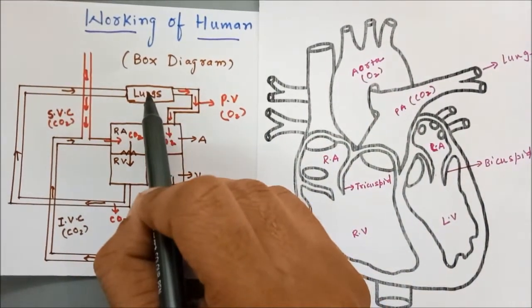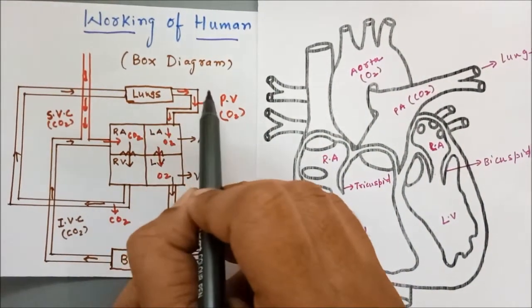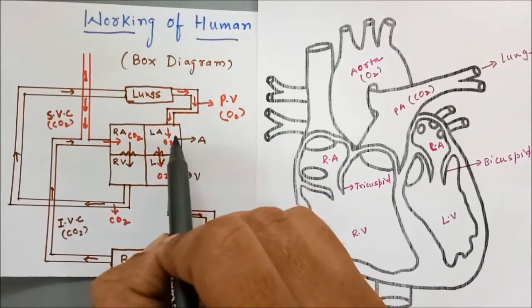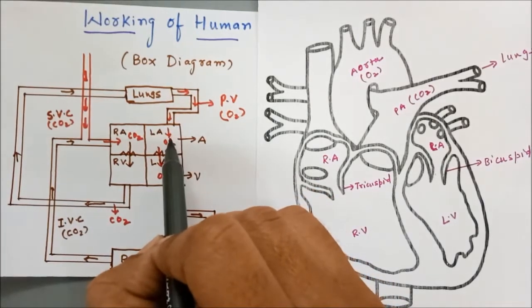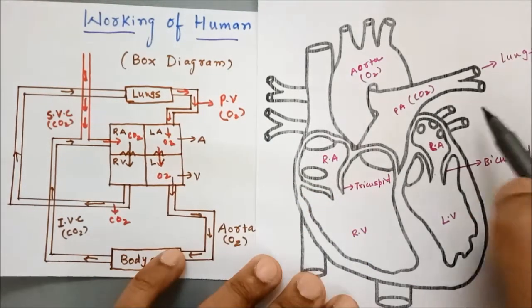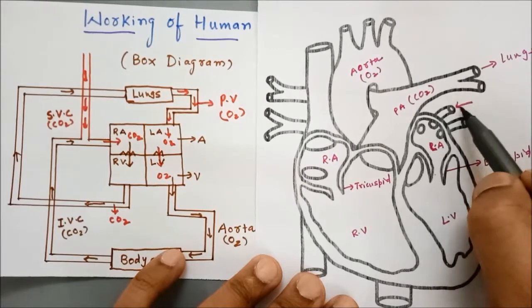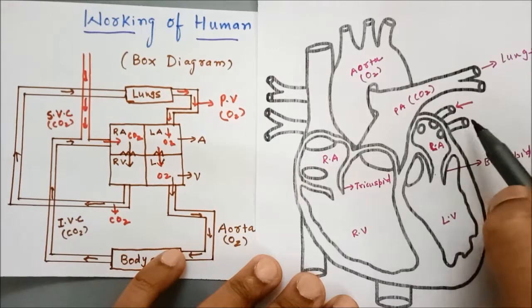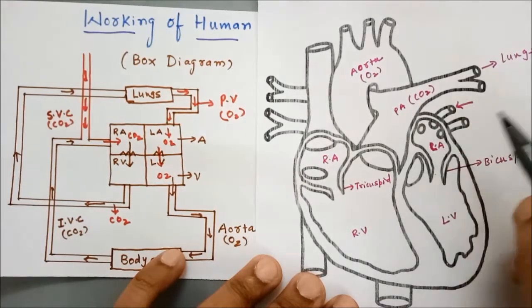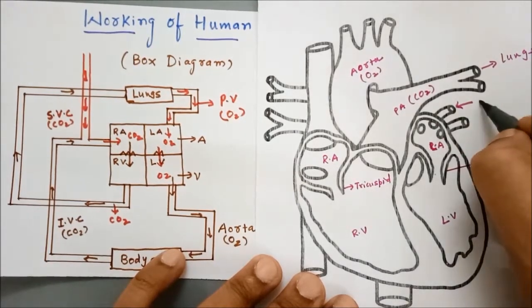Let us look at the pulmonary vein, which originates from the lungs and goes into the left atrium. You can see that the blood from the lungs will go like this, and these are nothing but the pulmonary vein.